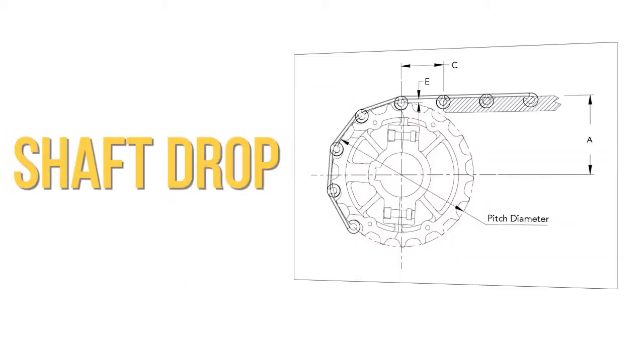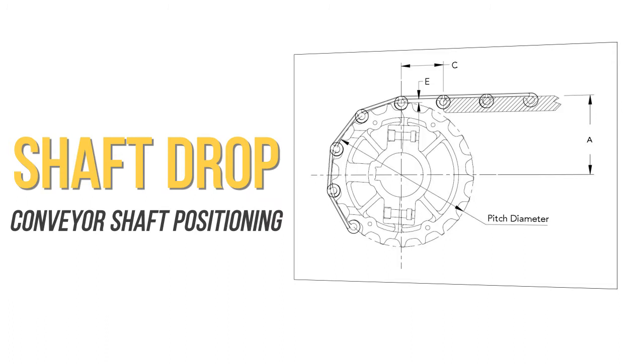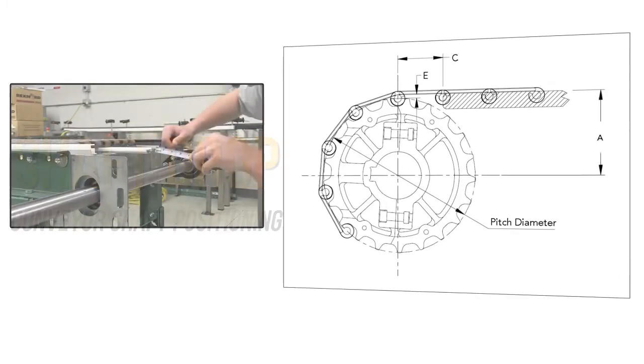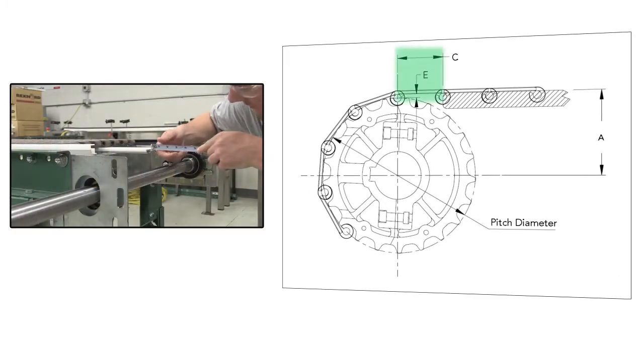The term shaft drop refers to the positioning of the conveyor shaft. The correct shaft drop measurement is crucial to provide chain sprocket engagement. The horizontal C dimension is defined as the center line of the shaft measured to the end of the wear strip.